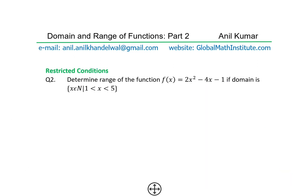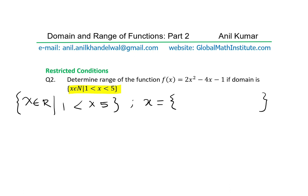Question 2: determine the range of the function f(x) = 2x² − 4x − 1, if the domain is x belongs to natural numbers and 1 < x < 5. When x belongs to natural numbers and x is between 1 and 5, the only values are x = 2, 3, and 4 — not 1 and 5 since the inequality signs are strict. Look at the signs carefully — it is not equal to.